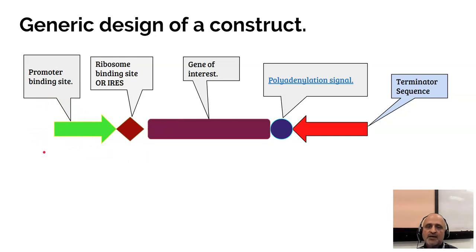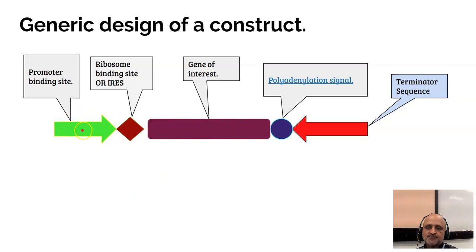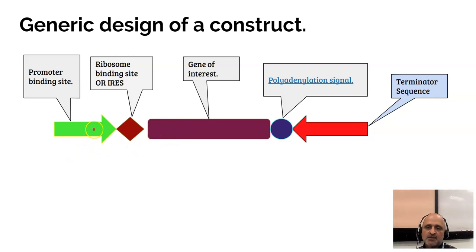If we want to express the gene of interest in human cell lines, we will have to utilize a CMV promoter which is specific to animal cells. However, if we want to express this same gene in a plant, we will have to use a 35S promoter which is a plant-specific promoter.